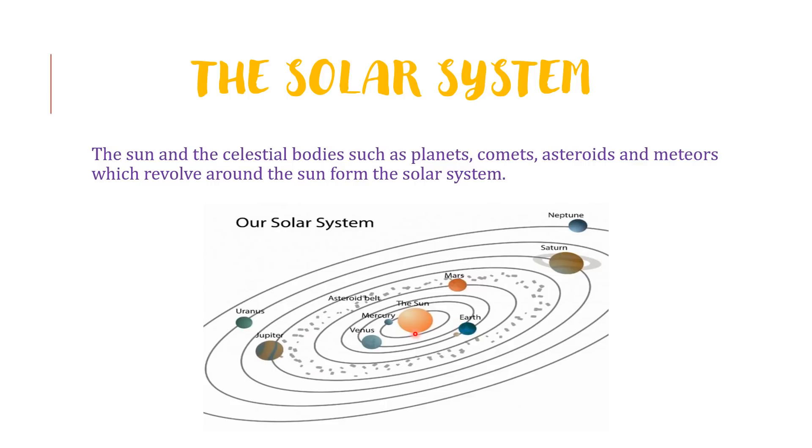The sun is the nearest star which is the main source of heat and light for all the planets. The planets do not have their own light like stars. They reflect the sunlight that falls on them. Planets do not twinkle like stars.